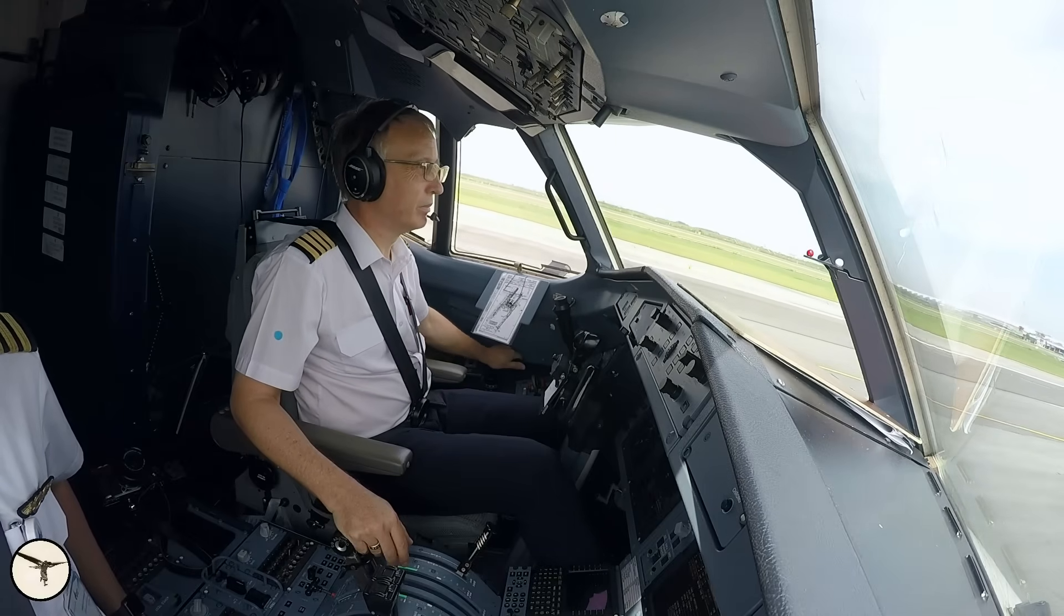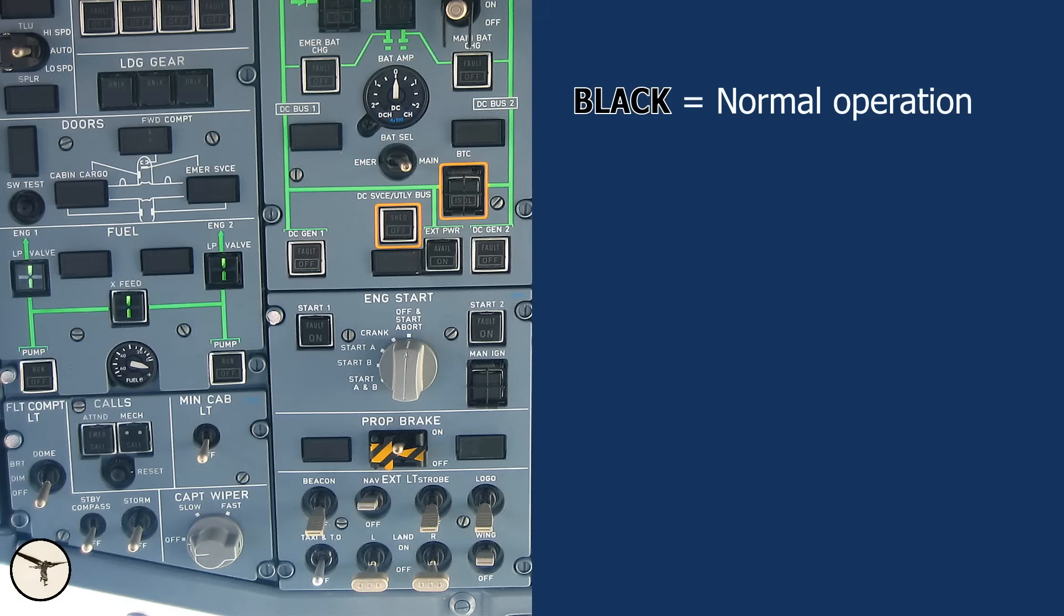Here is what the colors represent. Black, normal operation. When a generator is running normally, there is no indication.